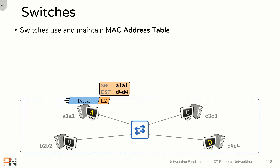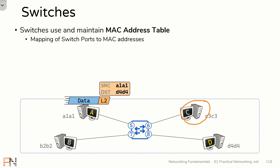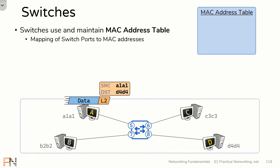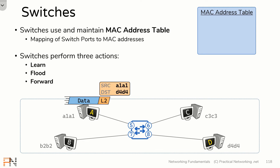Switches use and maintain a MAC address table — a mapping of switch ports to MAC addresses. Each of the hosts in our topology are plugged into this switch on a particular port. For instance, host C is plugged into port 6. Every switch uses different numbering schemes for their ports; for this illustration I'm using ports 5, 6, 7, and 8. The MAC address table maps a particular switch port to the device connected to that port — for example, out port 7 exists a device with the MAC address B2B2. This MAC address table starts out empty and gets populated as data flows through the topology. Beyond this MAC address table, the switch is only ever going to perform three actions: learning, flooding, and forwarding. If you understand these three actions, you understand how switching works — they apply to every switch regardless of platform, vendor, or code version.